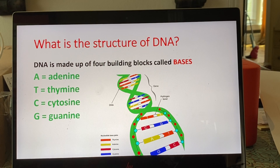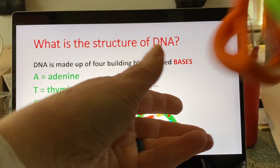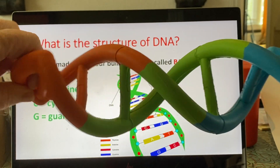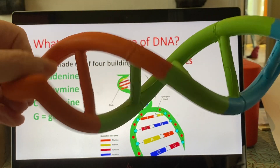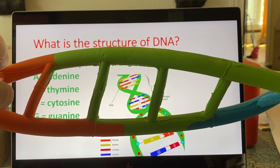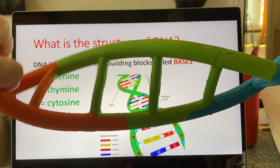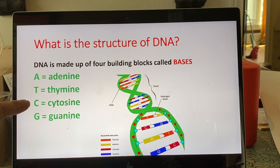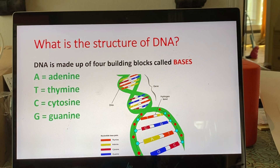Let's continue on with forensic DNA. In our first lecture I told you about the structure — here's Gertie's dog toy — so in the center of the ladder that is where the bases are going to pair with each other. DNA is made up of four building blocks we refer to as bases: A, T, C, and G. You do have to know those four.